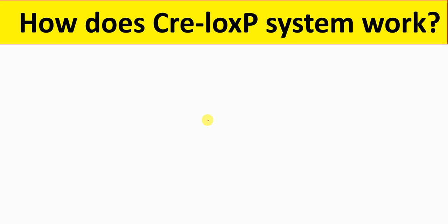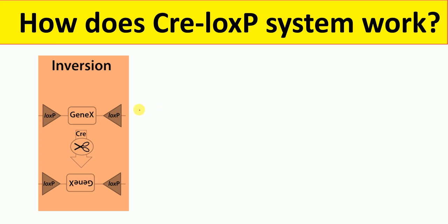One type of event is inversion. Inversion occurs when the LoxP sites are present on the same strand but are in opposite orientation — that is, one LoxP site is facing the other LoxP site. In this case, recombination with the Cre-LoxP system results in an inversion, meaning the region of DNA between the LoxP sites is reversed, leading to a reversed DNA or gene sequence between the LoxP sites.